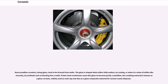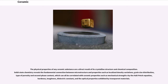The glass is shaped when either fully molten, by casting, or when in a state of toffee-like viscosity, by methods such as blowing into a mold. If later heat treatments cause this glass to become partly crystalline, the resulting material is known as a glass ceramic, widely used as cooktop and also as a glass composite material for nuclear waste disposal.